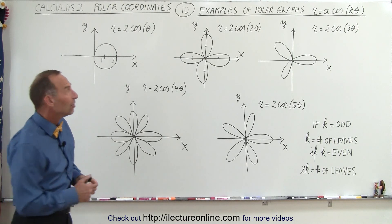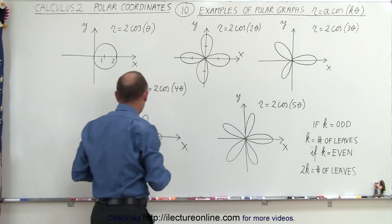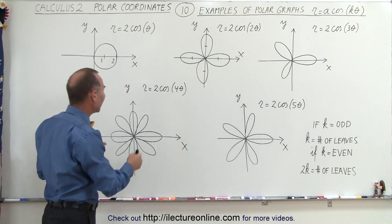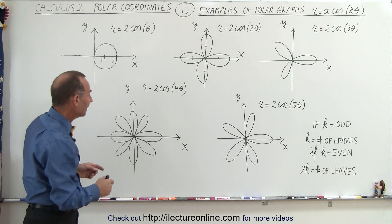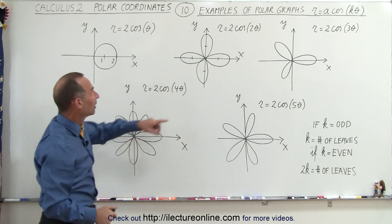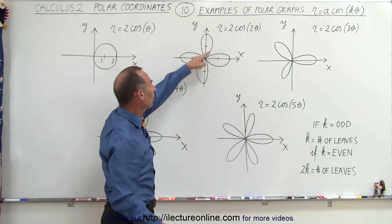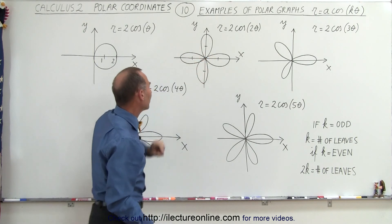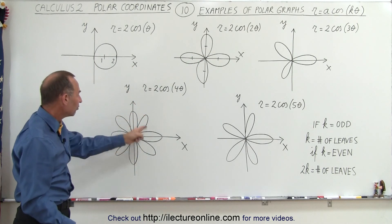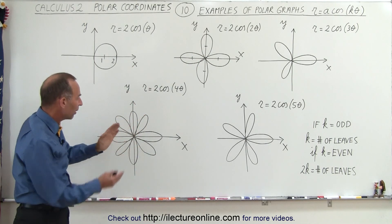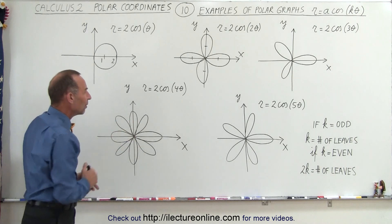When k is an even number, like 2 or 4, notice that every axis has a leaf on it. In the case of k equals 2, we only have four leaves, one on each of the axes. Here we have eight leaves, one on each of the axes, and the other four halfway in between each of the two axes.